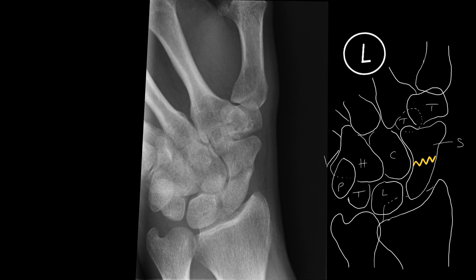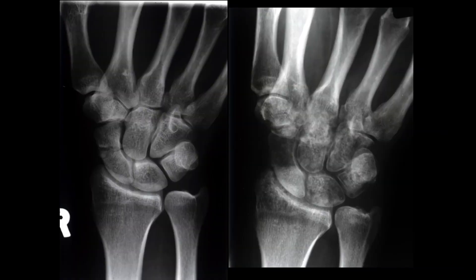Usually when the scaphoid fractures it does so in the scaphoid waist. One of the problems with a scaphoid fracture is if it's not treated properly or promptly it can lead to avascular necrosis. And this can also be a problem even if it is treated properly.